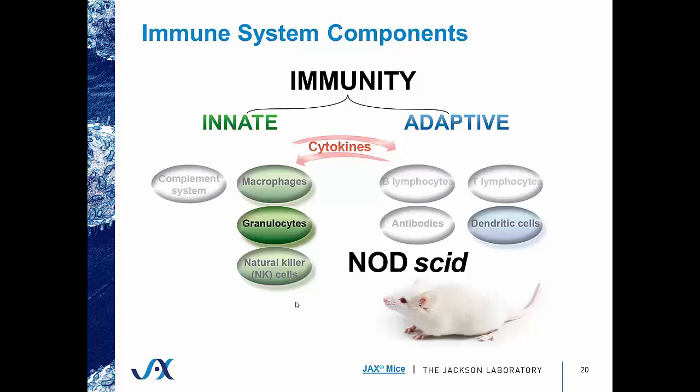The NOD background contributes to a range of innate immune cell deficiencies, including no complement, reduced macrophages, natural killer cells, and dendritic cells. The SCID mutation results in a lack of B cells and T cells. So what you're left with is a severely immunocompromised mouse.